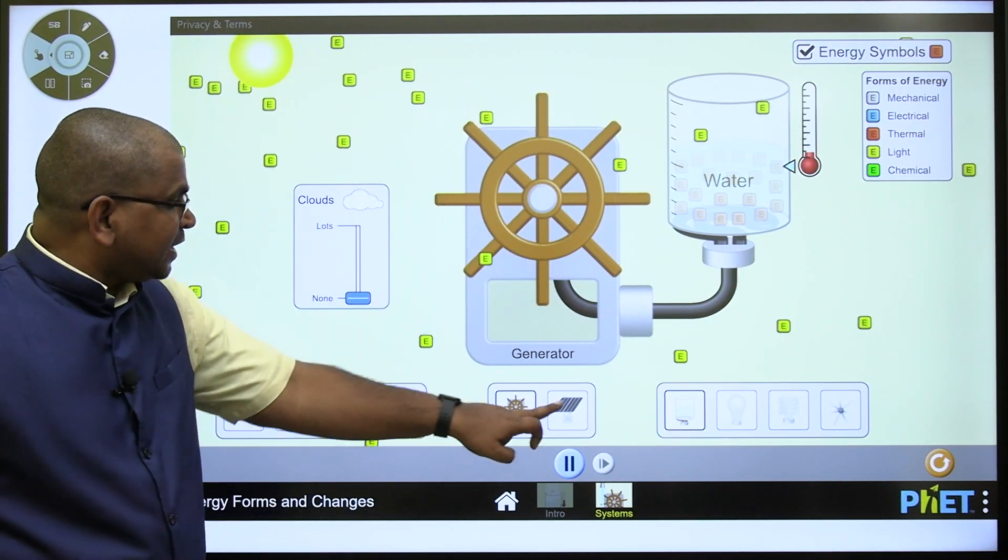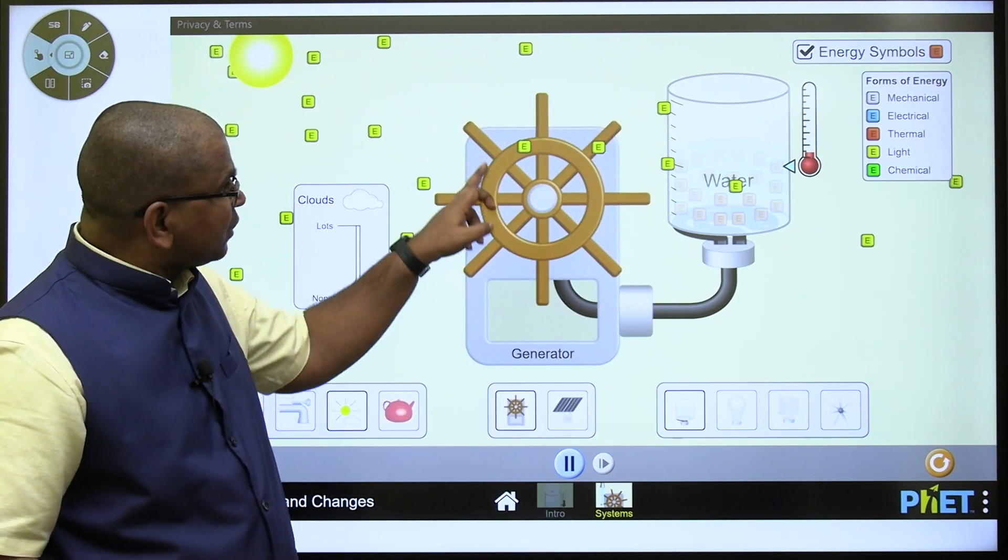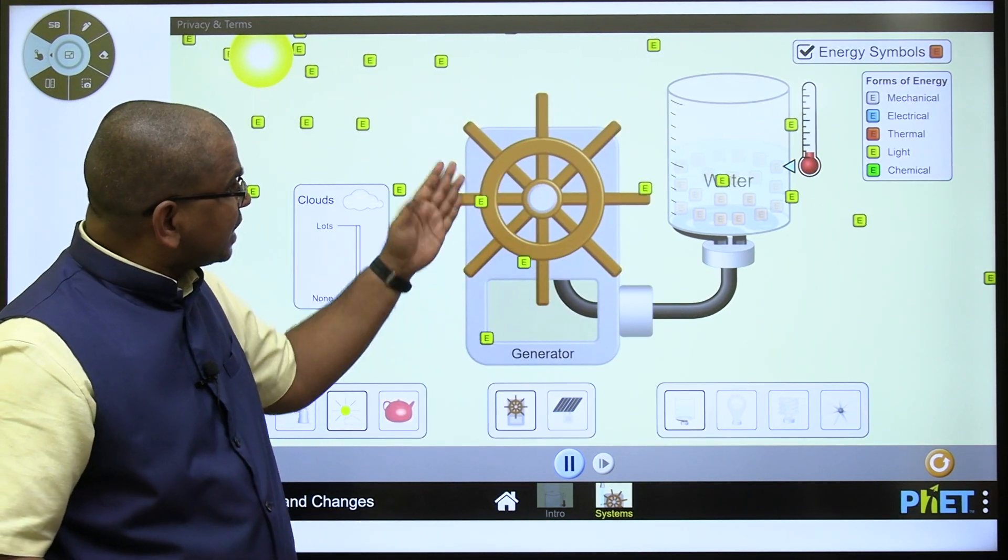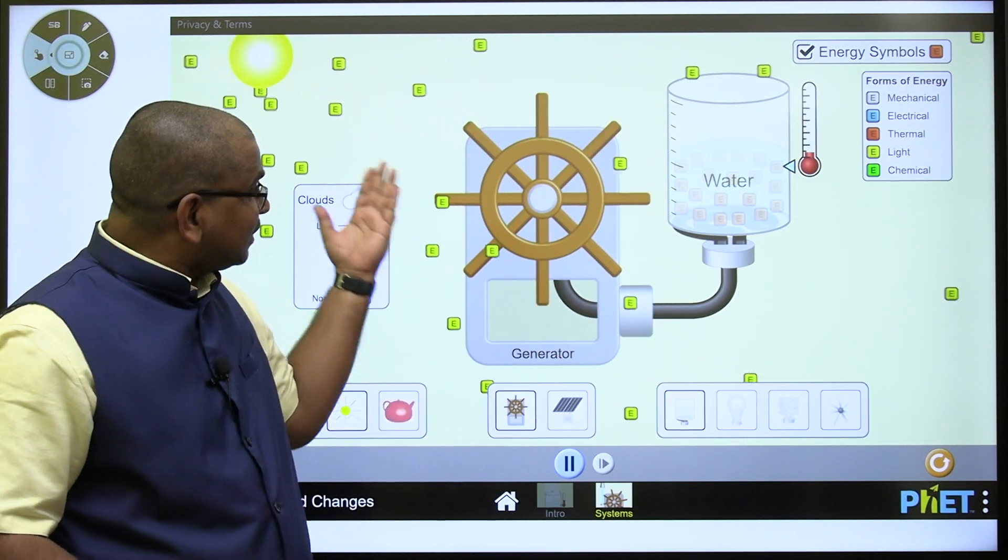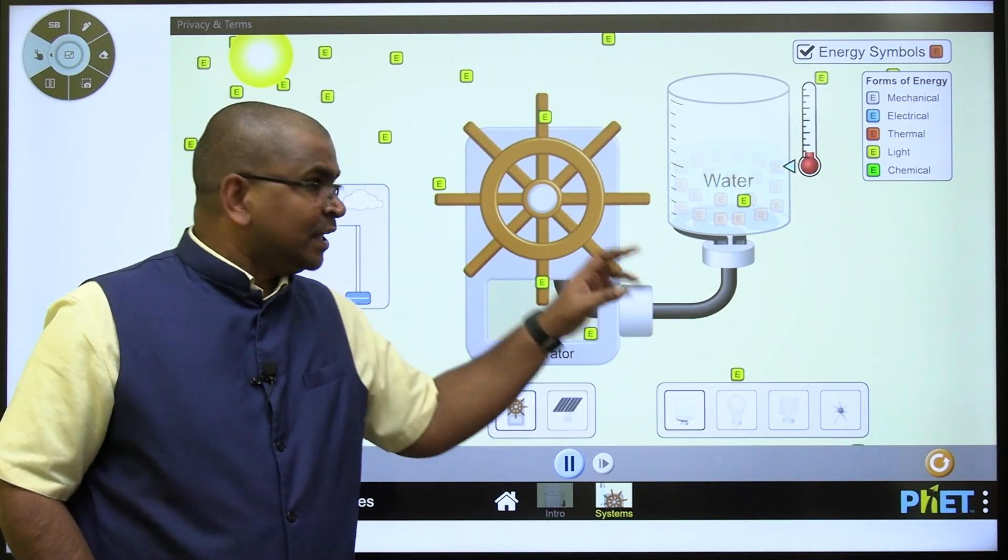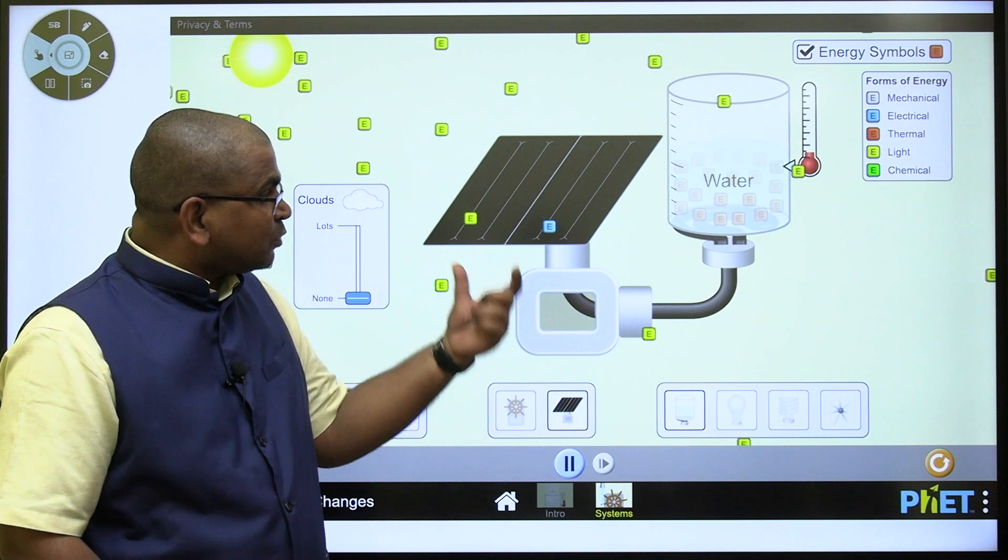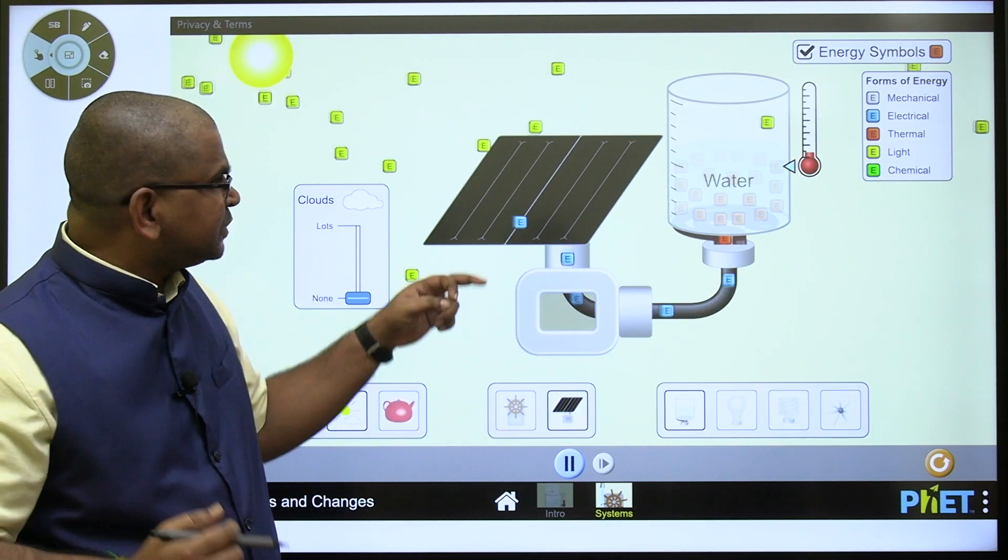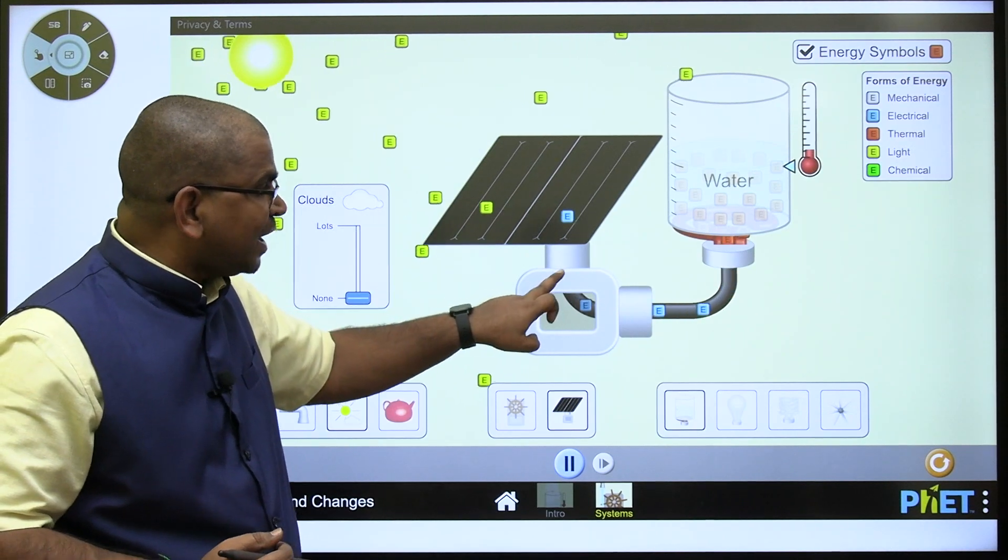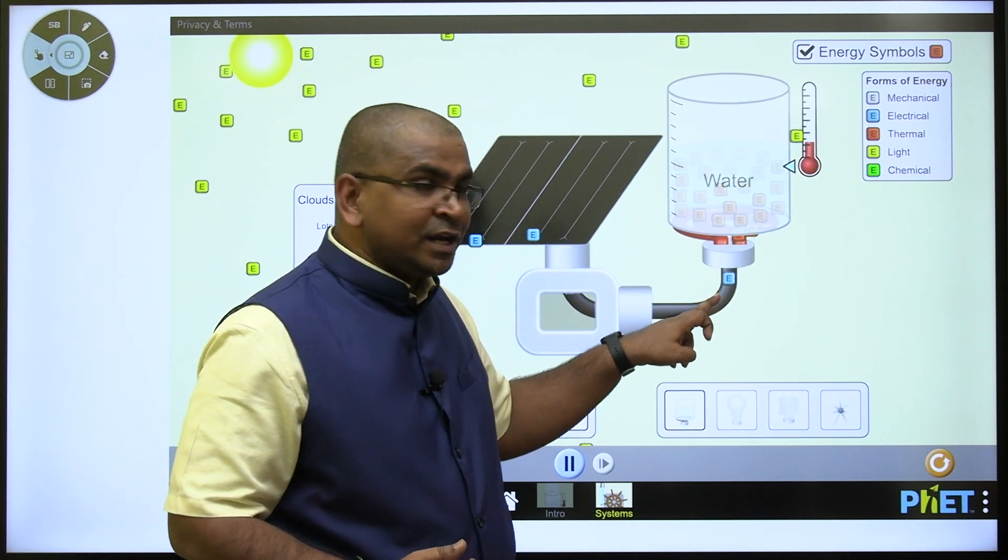Suppose if you take here a solar plate. Instead of solar plate, if you observe here this turbine, it is unable to convert that light energy. Yes, generators are unable to take that light energy and convert it into electrical energy. That is why this system won't work if I take the solar energy for that one. The solar plate is an innovation, a beautiful innovation, which can convert light energy into electrical energy. And this electrical energy at a heater will convert electrical to thermal.